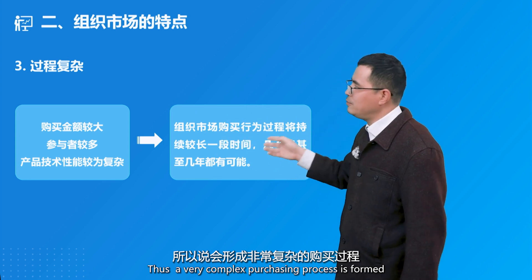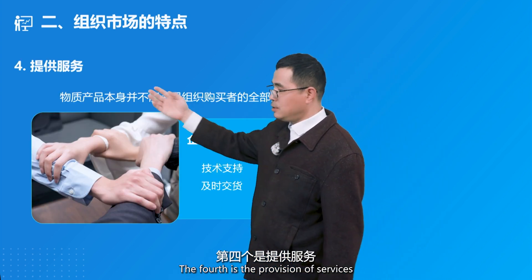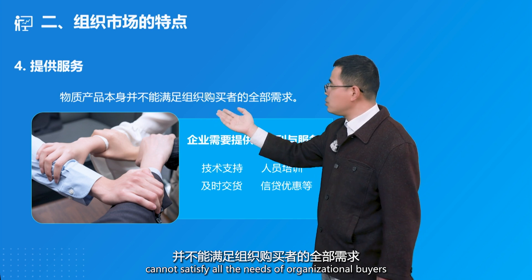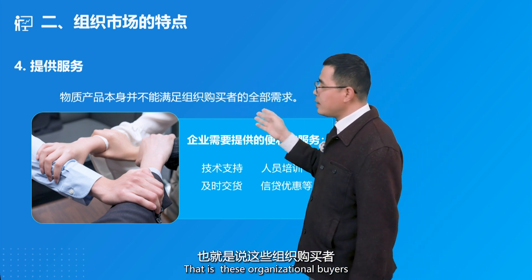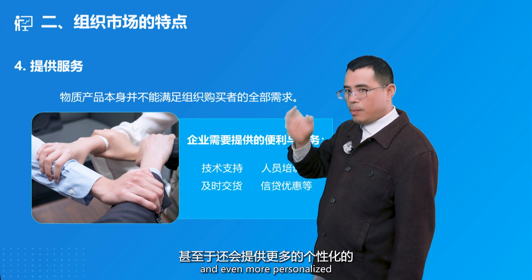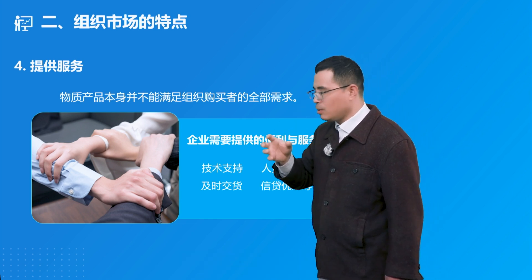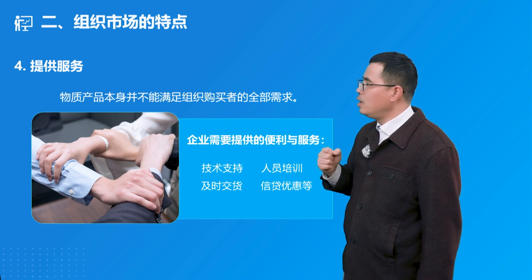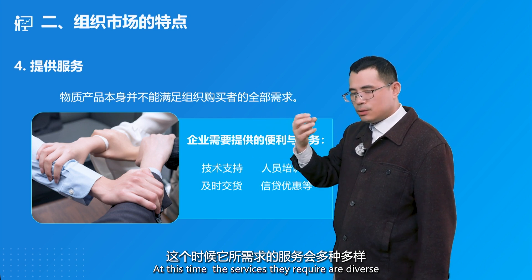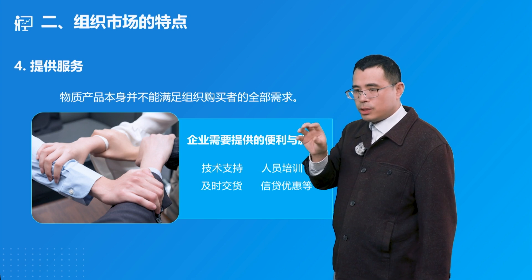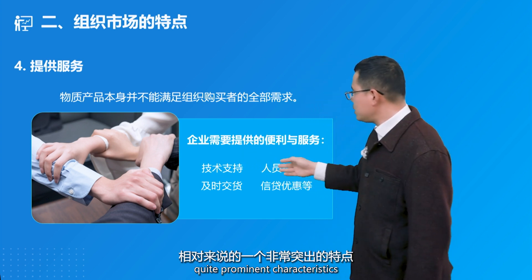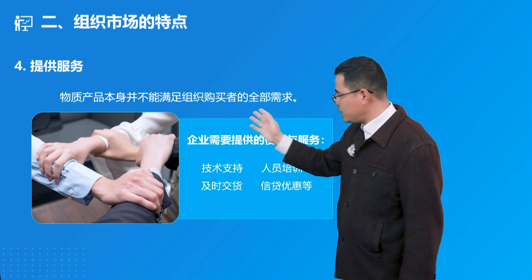Thus, a very complex purchasing process is formed. The fourth characteristic is the provision of services. Material products alone cannot satisfy all the needs of organizational buyers. These organizational buyers are not just purchasing products — they also require maintenance services, warranty services, and even more personalized requirements that need to be met. The services required are diverse and can even be personalized. These are quite prominent characteristics of the organizational market compared to the consumer market.